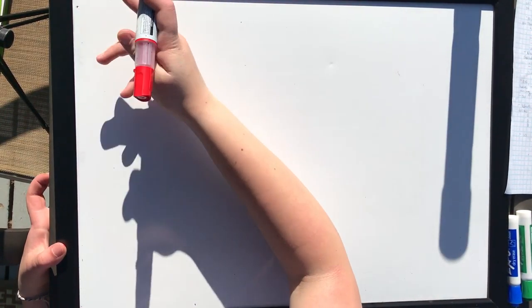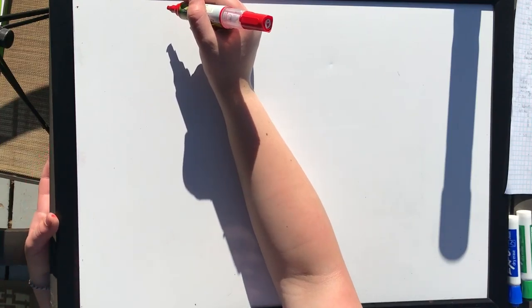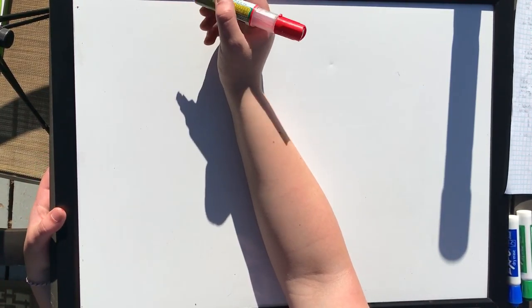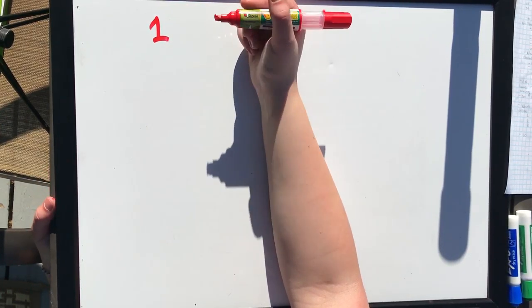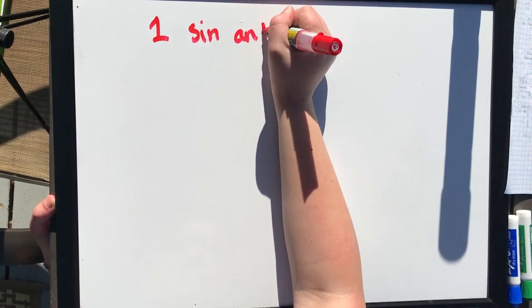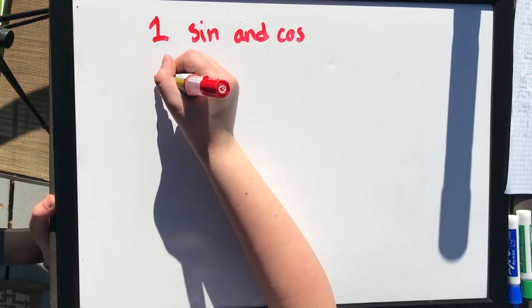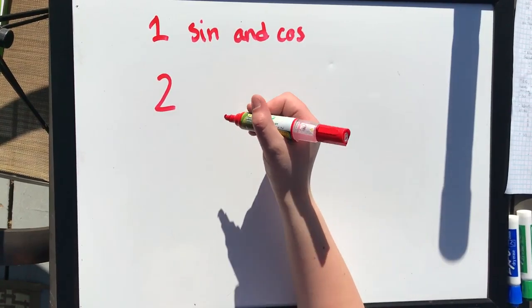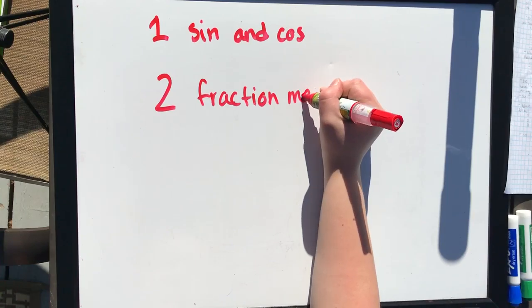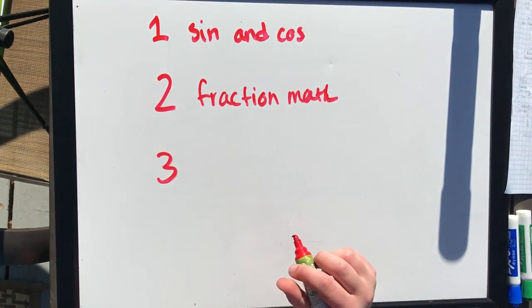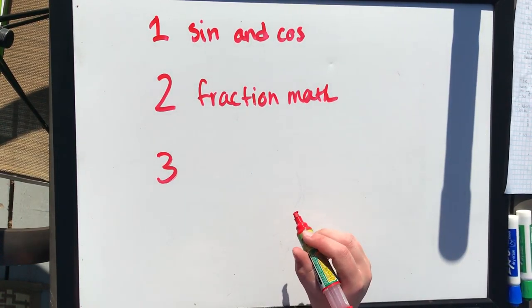Now that you have them written down, you can refer to them during the lesson. Let's go from easy to hard. When verifying trig identities, it is important to follow these steps. Step 1: convert the identity into forms of sine and cosine. Step 2: complete fraction math. Step 3: substitute things for identities.